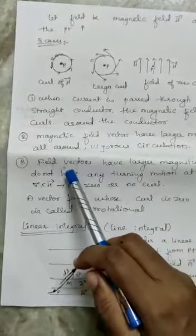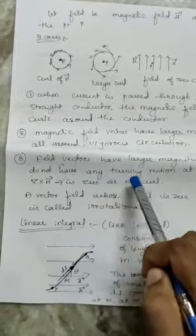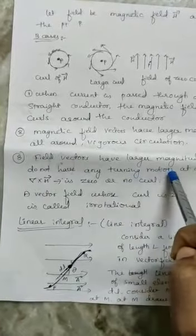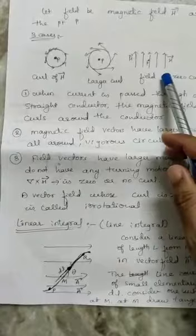Third case: field vectors have larger magnitude but they do not have any turning motion at all, then it is called zero curl.